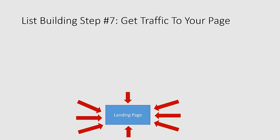Step number seven is to focus in on every traffic generation method possible. At the bottom of this page you're going to see some red arrows that you can't miss right now. That blue circle in there means landing page — your landing page, your squeeze page. Each one of these red arrows signifies traffic, a traffic source of some kind.